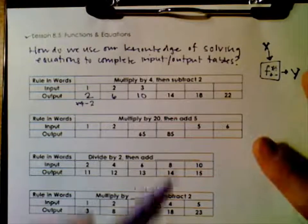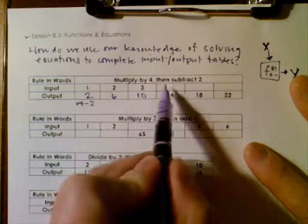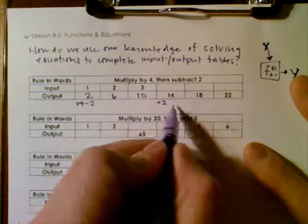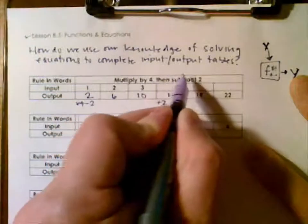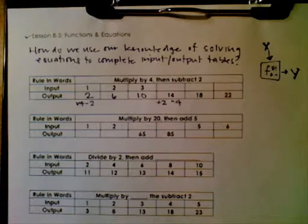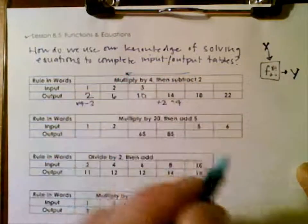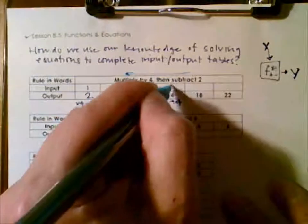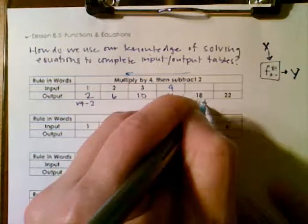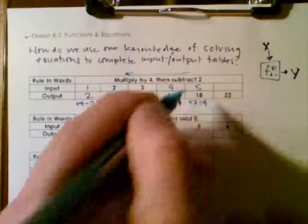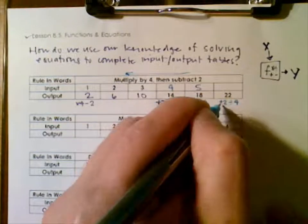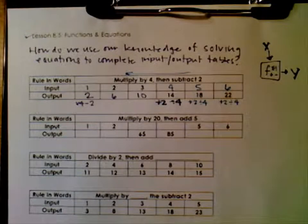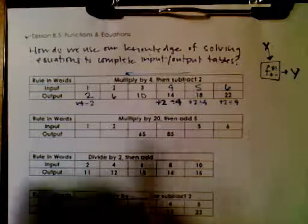Now with these ones we're going in the opposite direction — working backwards. Instead of subtracting 2 we're going to add 2, and instead of multiplying by 4 we're going to divide by 4. So: 14 plus 2 is 16, divided by 4 is 4. Then 18 plus 2 is 20, divided by 4 is 5. And 22 plus 2 is 24, divided by 4 is 6.